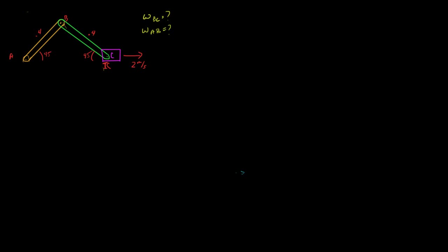In this example, I want to use the method of instantaneous center to determine the angular velocity of link BC and the angular velocity of link AB. A is going to be fixed. The distance separating A and B is 0.4 meters at a 45-degree angle. BC is going to have a link length of 0.4 and is also going to be at a 45-degree angle. The piston or block at C is moving to the right at 2 meters per second.